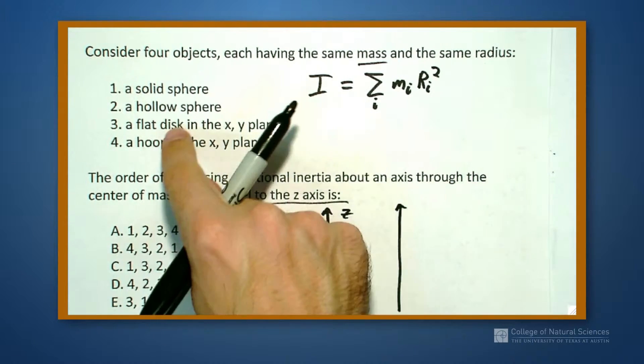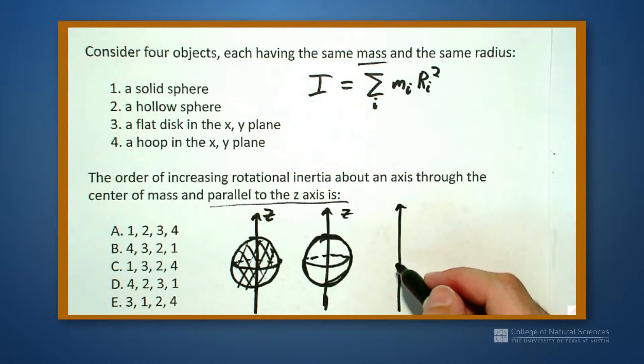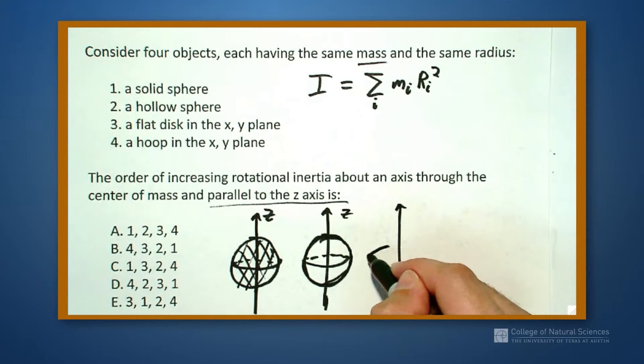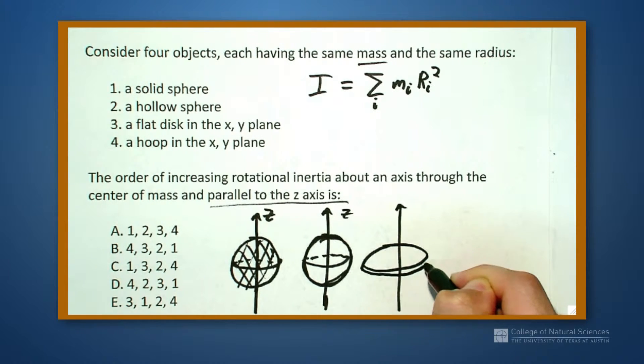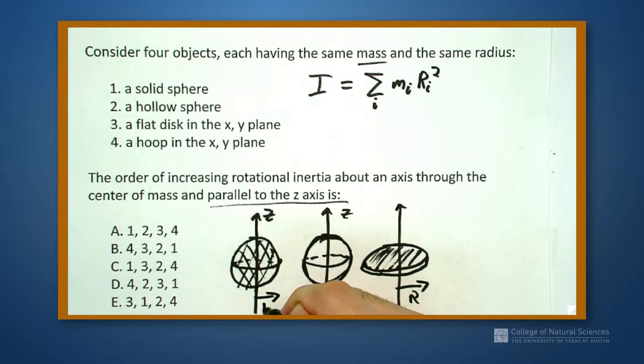We have another case where we have a flat disk in the x-y plane, which means that we have a disk that looks like this, give it a little bit of a dimension, but it's solid all the way through and it all has the same radius.